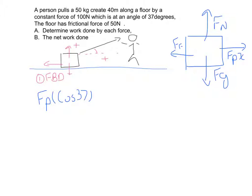That force is 100 newtons to begin with. So the force of friction equals 50 newtons, and the force of the pull equals 100 newtons times cosine 37 degrees.